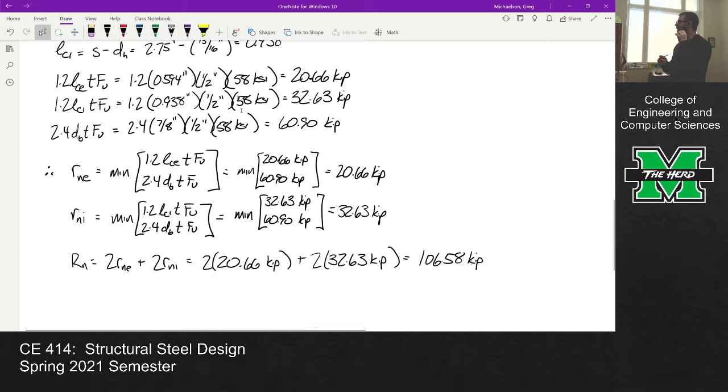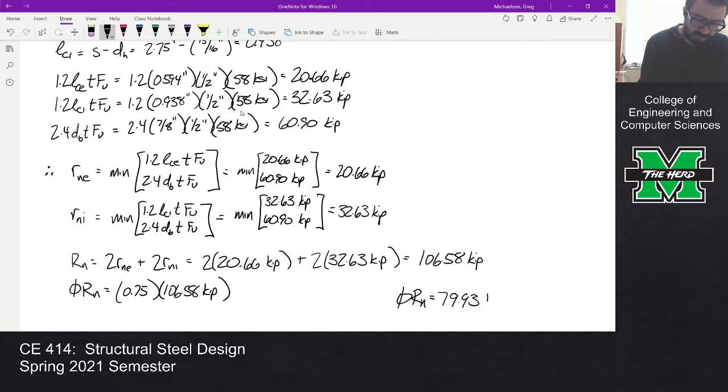And then what am I missing? The phi value, because that's just a nominal capacity. Phi*rn is phi times 0.75, so phi*rn comes out to be 79.93 kips, a little bit less than that case with the bolt shear.